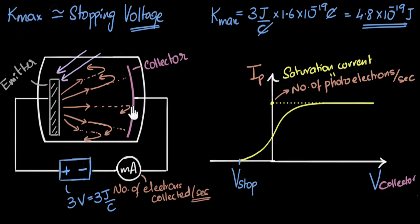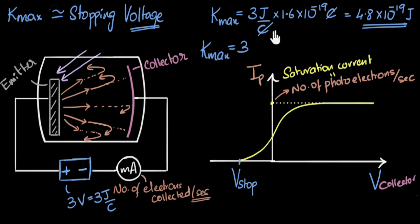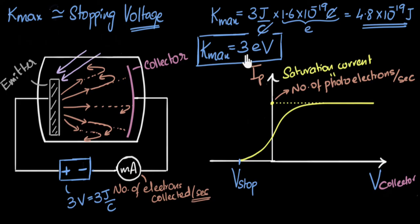Remember, we can only do this for the fastest electron. Other electrons did not travel the entire 3 volts — some were stopped by 2 volts or 1 volt. So this is the maximum kinetic energy. Because these energies are so tiny, instead of writing in joules we can write in another unit. We write 3, but instead of substituting the value of E (electron charge), we just keep it as E. What remains is joules per coulomb, which is volt — so 3 electron volts. The stopping voltage itself equals the maximum kinetic energy in electron volts. If stopping voltage was 10 volts, maximum kinetic energy is 10 electron volts.